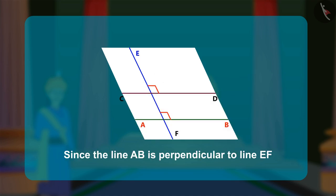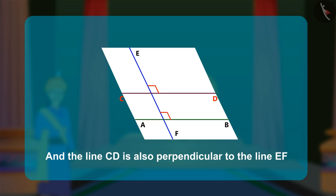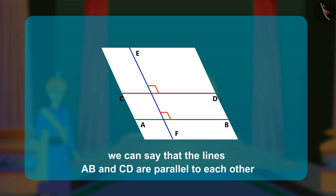Since the line AB is perpendicular to line EF and the line CD is also perpendicular to the line EF, we can say that the lines AB and CD are parallel to each other, explained Birbal.